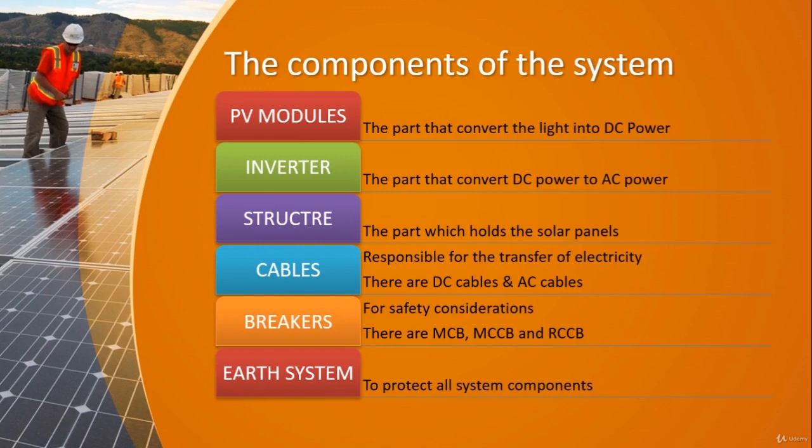The DC power from the PV modules goes to the inverter, and the inverter converts it to AC power, which is what we use in our homes. The structure of the system is the part which holds the solar panels.